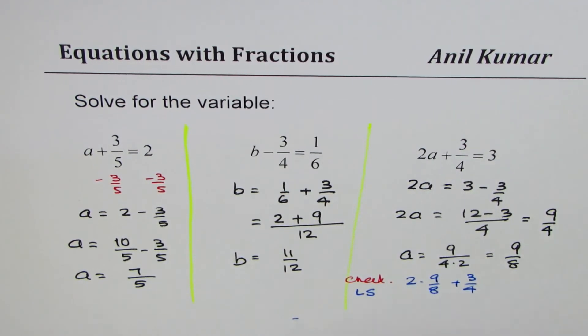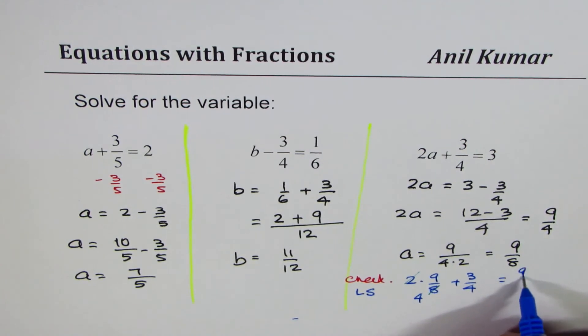2 times 9 over 8, this 2 cancels with 8, giving us 4. So we have 4 here. So we have this as 9 over 4 plus 3 over 4. 9 plus 3 is 12. 12 over 4.